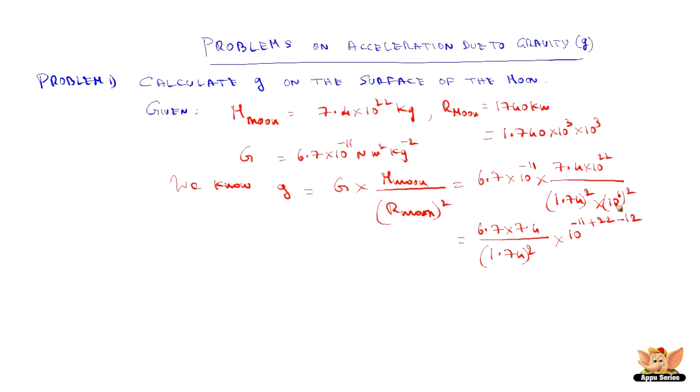60 is 12 so this goes up so it becomes minus minus 12. So 22 minus 11 plus 11 plus 11 minus 12 it becomes minus 1. So this becomes 10 to the power minus 1 and this will be 16.3. So this is 1.63 meter per second square. So the g on the moon is 1.63 meter per second square.